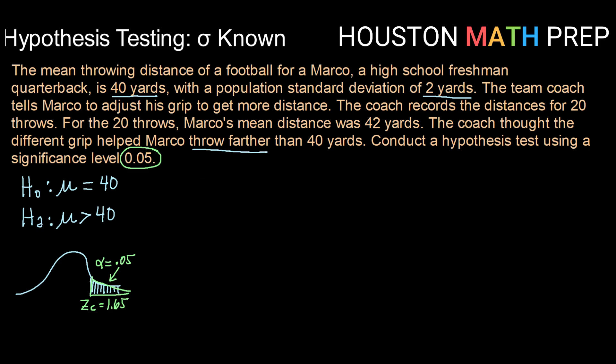Now we want to calculate the test statistic. So the Z-score based upon this sample of 20 throws that had a mean of 42 yards. Our test statistic will be x̄ minus μ over σ divided by the square root of n. In this case, that will be our x̄ of 42 minus our μ of 40 over σ, our standard deviation of 2 yards, divided by the square root of the number in our sample, which was 20.